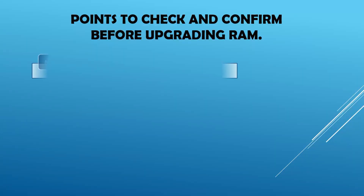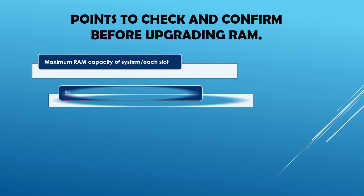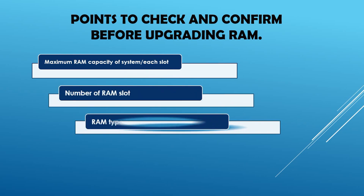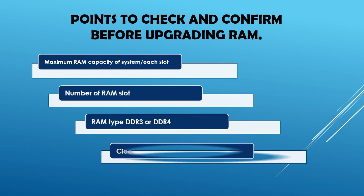We will check the maximum RAM capacity, number of RAM slots, RAM type, and clock speed. Check the CPU-ID app installed. The RAM slot, RAM type, and clock speed can all be checked in CPU-ID.